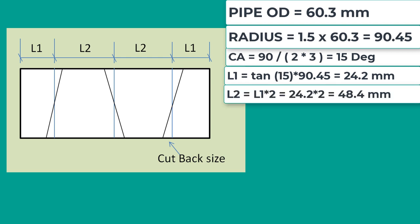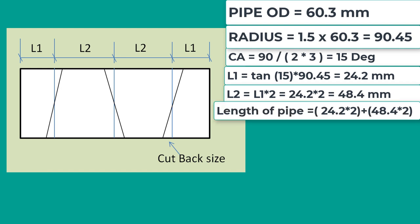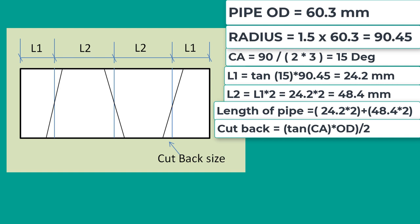L2 is equal to L1 into 2 equal to 48.4mm. Now we should calculate the required length of pipe. Required length of pipe equal to L1 into 2 plus L2 into number of pieces minus 2. So it will be 24.2 into 2 plus 48.4 into 4 minus 2 equal to 145.2 millimeter. We can take it as 145mm.